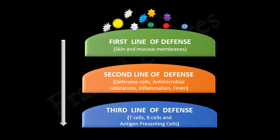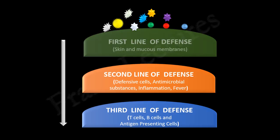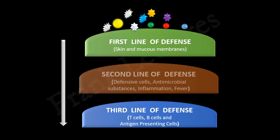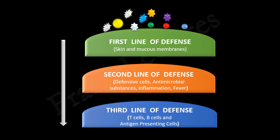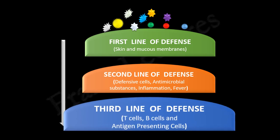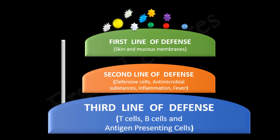For this function, we have three lines of defense in our body: the first line of defense, the second line of defense, and the third line of defense. The third line of defense is the most significant. It is made up of B and T lymphocytes which are responsible for adaptive immunity.